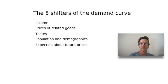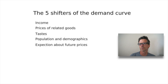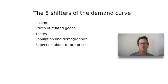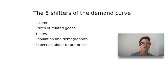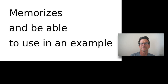There are five shifters of the demand curve: income, prices of related goods, tastes, population and demographics, and expectations about the future — or at least future prices. You should be able to memorize these and use an example. You're going to have to memorize it first, and then subsequently hang data, facts, and examples onto this conceptual framework. I'll show you at the end how to do that.